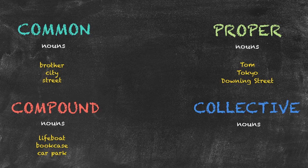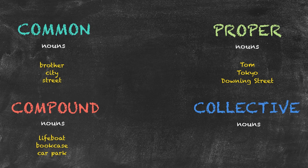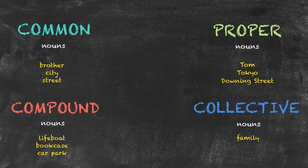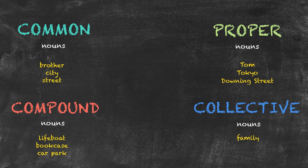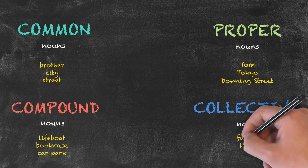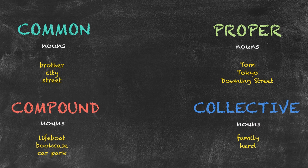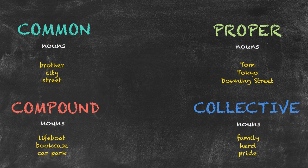We also have our collective nouns. Collective nouns are the nouns that group individual things or people together. Family is one example. Family groups together relatives. We also have herd, a herd of cattle. Another example would be a pride, a pride of lions.